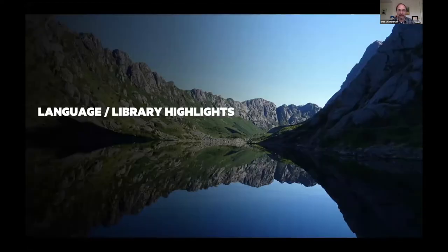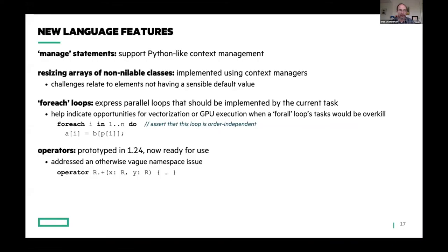Next I'll turn to highlights and changes in the language and library. In terms of language features, we've introduced a new manage statement, which provides context management like you might be familiar with in Python. We've used this to support resizing arrays of non-nilable classes, which has been a real challenge. We've introduced a new parallel loop form — the foreach loop — designed when you want vector or GPU-style parallelism without spawning new threads. We've also introduced a new operator keyword for operator overloads, which solves some rough corners we'd been wrestling with.